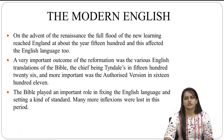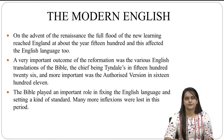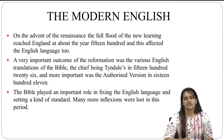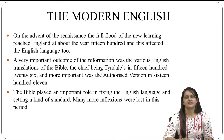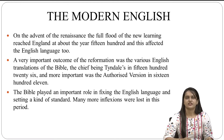Many more inflections were lost in this period. Printing too played an important role. The printers of Queen Elizabeth's time fixed the spelling according to the pronunciation that existed during the late Middle English and early Modern English period. However, the pronunciation changed considerably after that but not the spelling. Hence, the pronunciation was not phonetically reflected in the orthography. Hence, the English spellings are largely symbolical of thoughts and are not always a phonetic representation of the actual sound of the words.